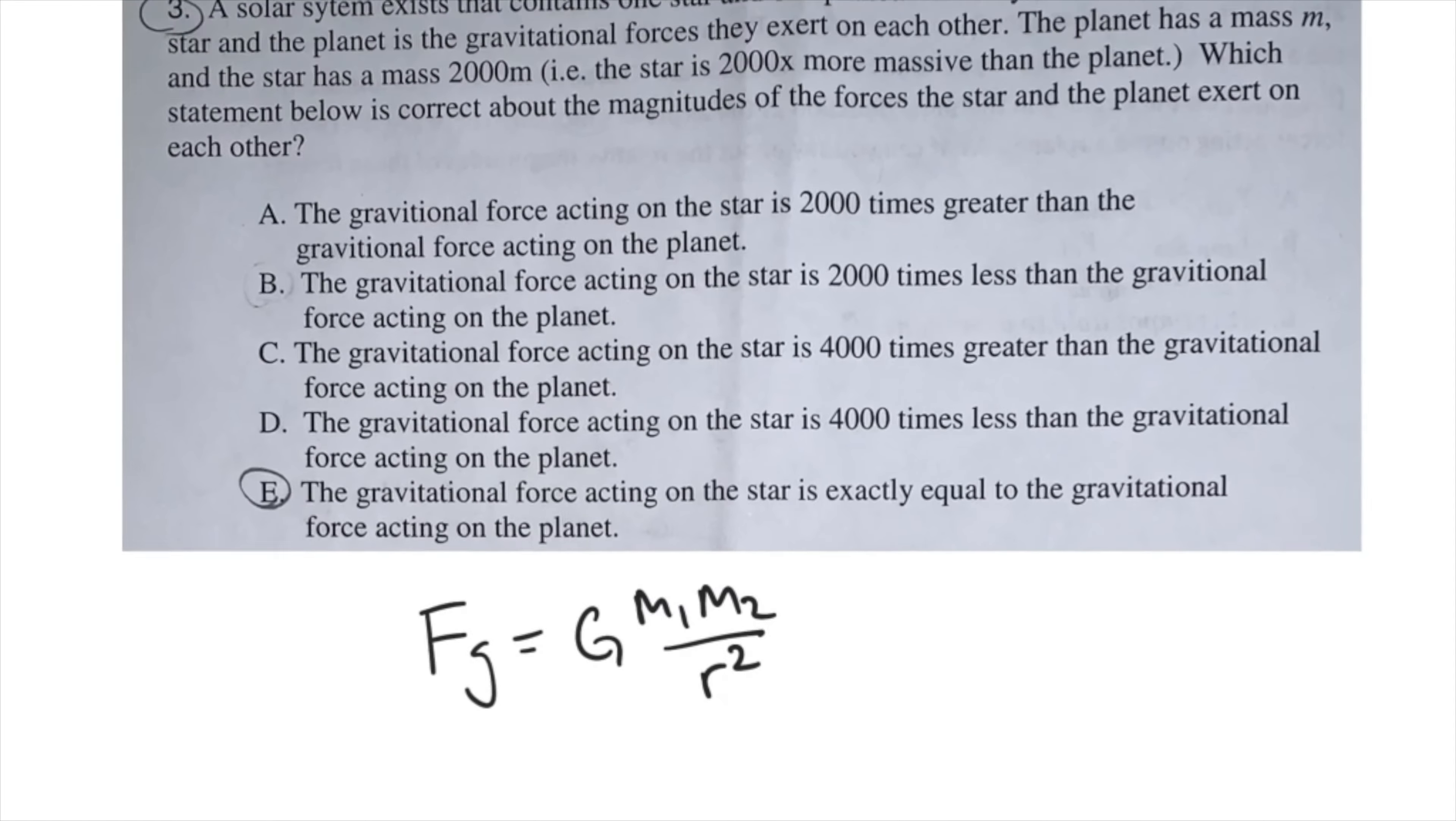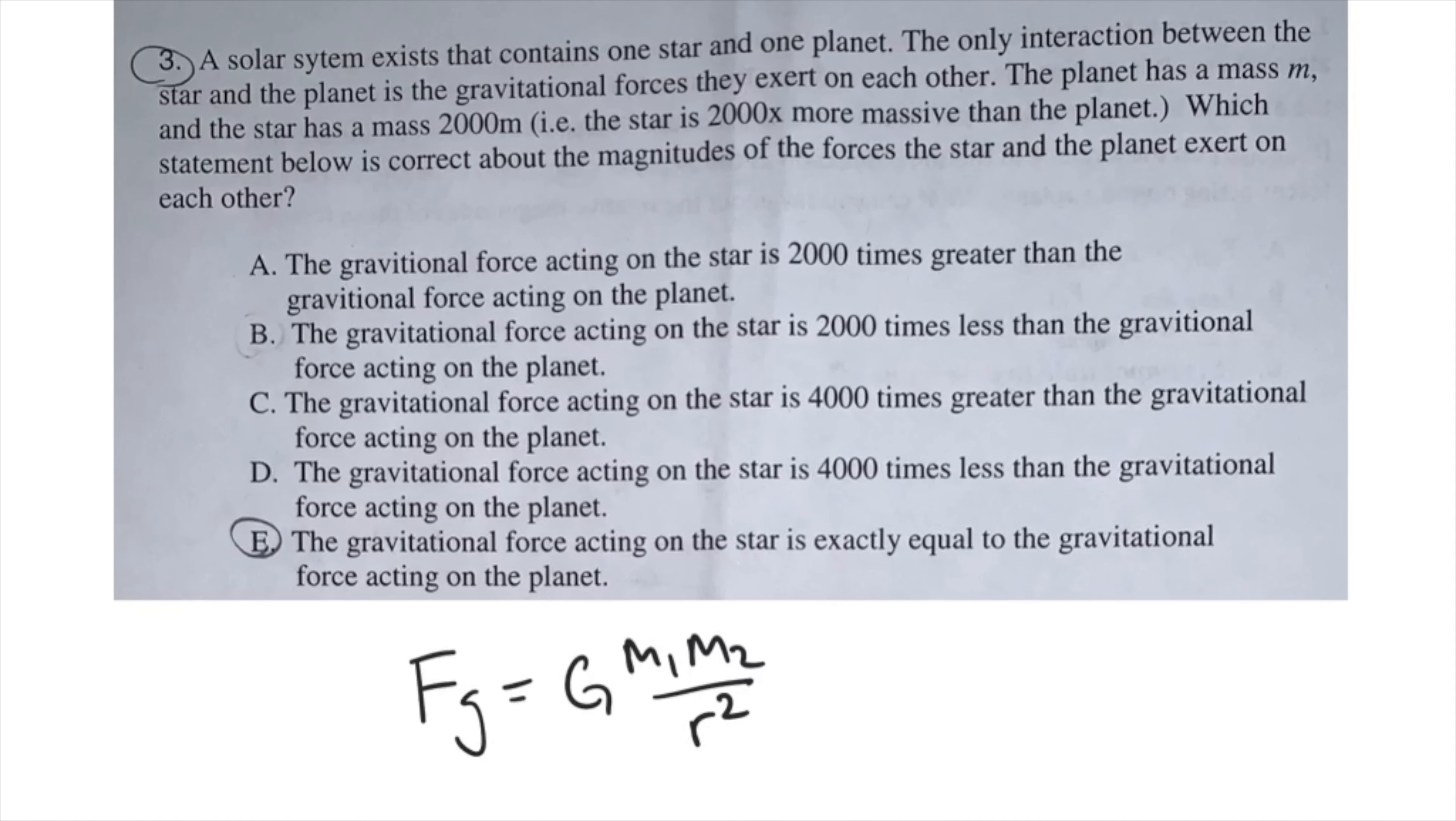If you look at this equation, you'll see that no matter what the masses are, the force of gravity between mass 1 and mass 2 is exactly equal. Therefore, the gravitational force acting on the star is exactly equal to the gravitational force acting on the planet, because Fg is equal between mass 1 and mass 2.